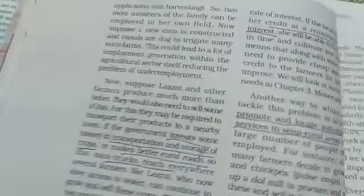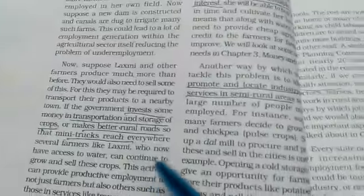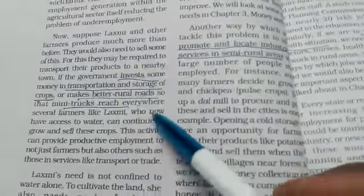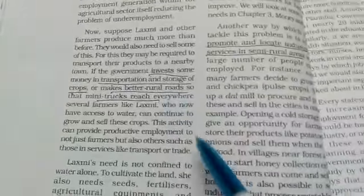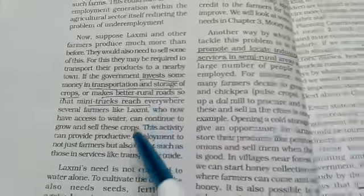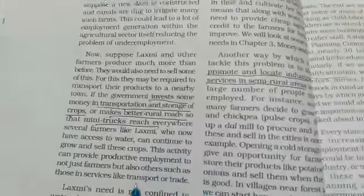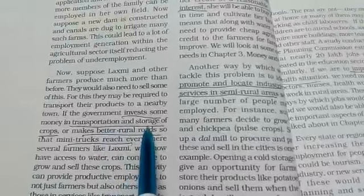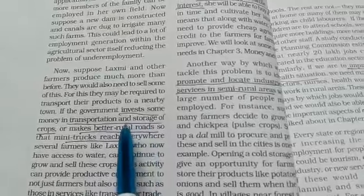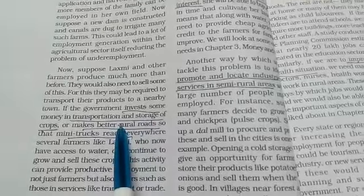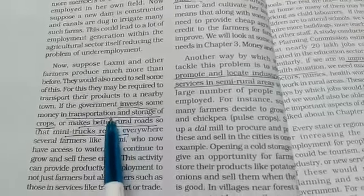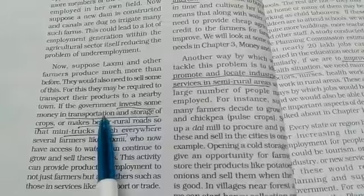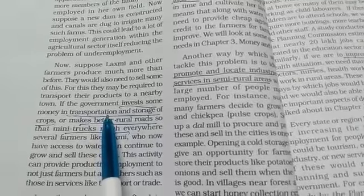I'll show you all the points over here. This is otherwise a self-explanatory question — you can add on many more points if you want. See how it is explained by taking the example of a lady known as Lakshmi. What it says is: the government should invest some money on the transportation and storage of crops. In this way, the government is developing the agriculture sector, and investing more in these services will generate new employment opportunities.